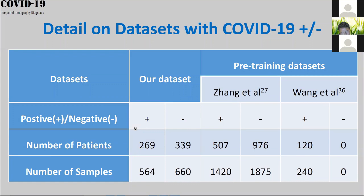A question about blood routine examination data — such as red blood cells, hemoglobin — and whether we incorporated it into our analysis. We don't have this information in our datasets. All datasets we used are publicly available, and we also published our collected dataset on GitHub, but blood examination data is not included. If we had it, we would certainly use it.